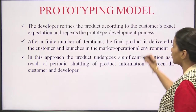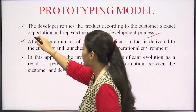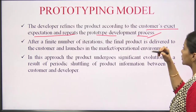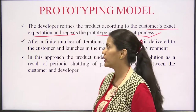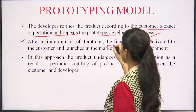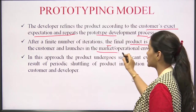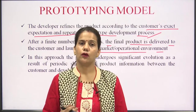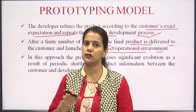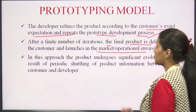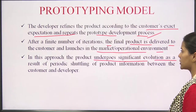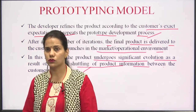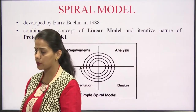The developer refines the product according to the customer's exact expectations and repeats the prototype development process. After a finite number of iterations, the final product is delivered to the customer and launched in the market or operational environment — but only after all customer requirements are fulfilled. In this approach, the product undergoes significant evolution as a result of periodic shuttling of product information between the customer and the developer.